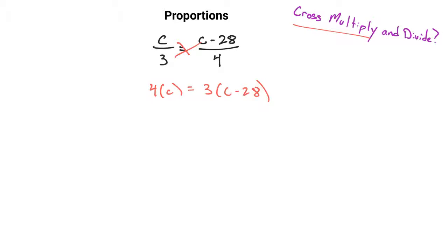So to finish this problem, you would first have to distribute the 3 to both parts on the right side of the equation, giving you 3c minus 84, and on the left side, you just have 4c.